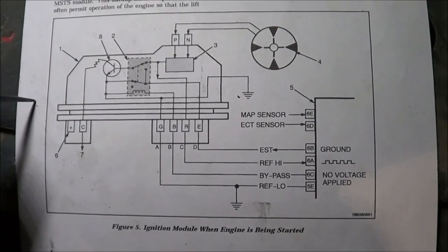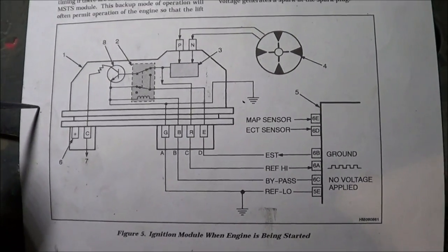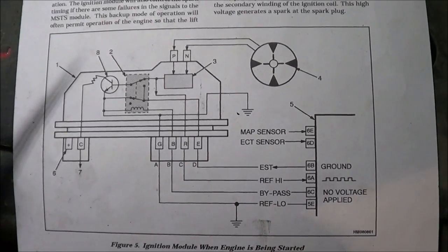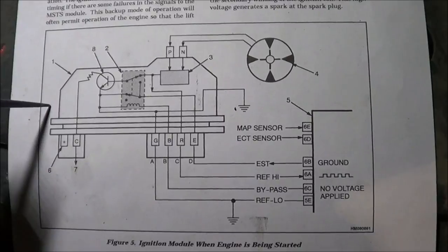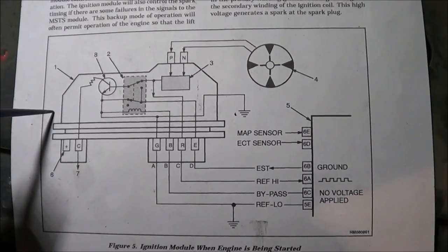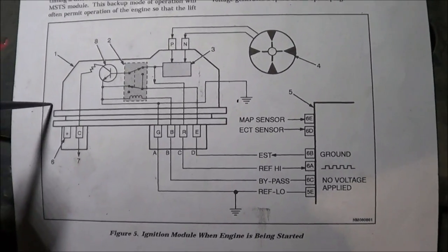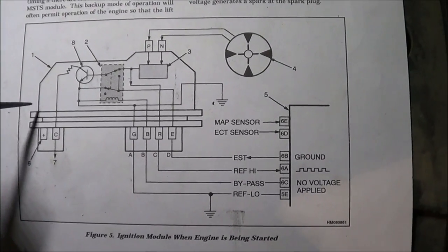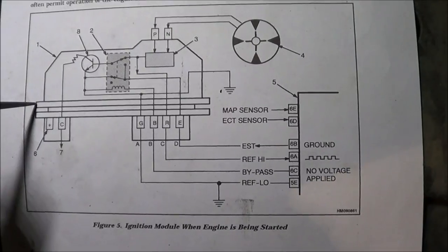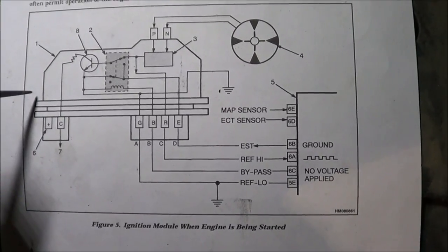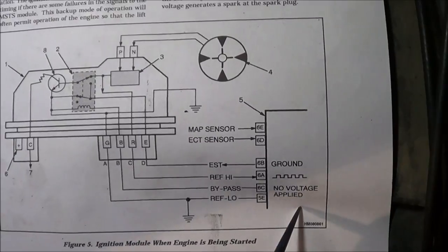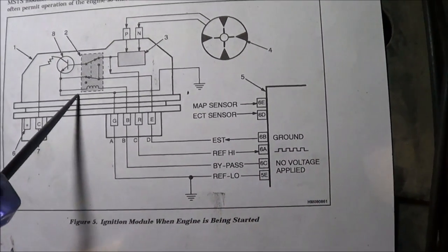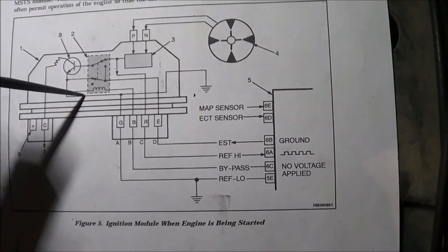Basically the GM bypass system is when at startup, the ECM is not in control of the spark timing. It is the ignition module that is in control of the spark timing at startup, meaning less than 400 RPM.